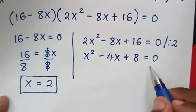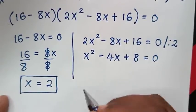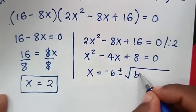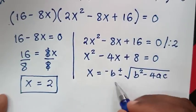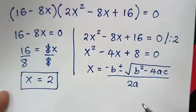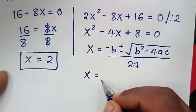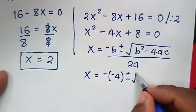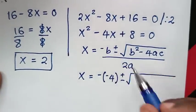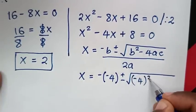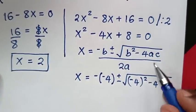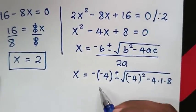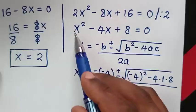We solve this quadratic equation using the quadratic formula: x equals negative b plus or minus the square root of b² minus 4ac, all over 2a. Here b is negative 4, a is 1, and c is 8. Substituting: x equals negative (negative 4) plus or minus square root of (negative 4)² minus 4 times 1 times 8, over 2 times 1.